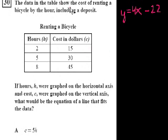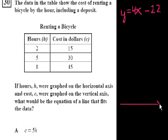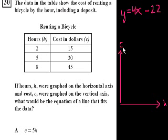Problem 30. The data in the table shows the cost of renting a bicycle by the hour, including a deposit. Hours h are on the horizontal axis and cost is on the vertical axis. We want the equation of the line that fits the data. It's a linear relationship, so we can treat it like any other line.